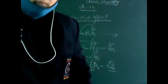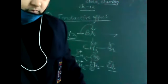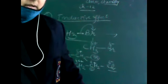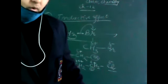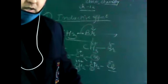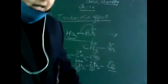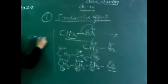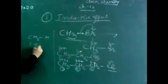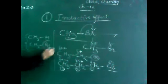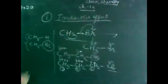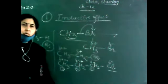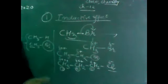Now let's see problem 12.14. It is written: which bond is more polar in the following pairs of molecules? The first pair is CH3H and CH3Br. Br is highly electronegative, so it will attract the electrons from CH3, polarity will develop, and this bond will be more polar — so CH3Br has the more polar bond.